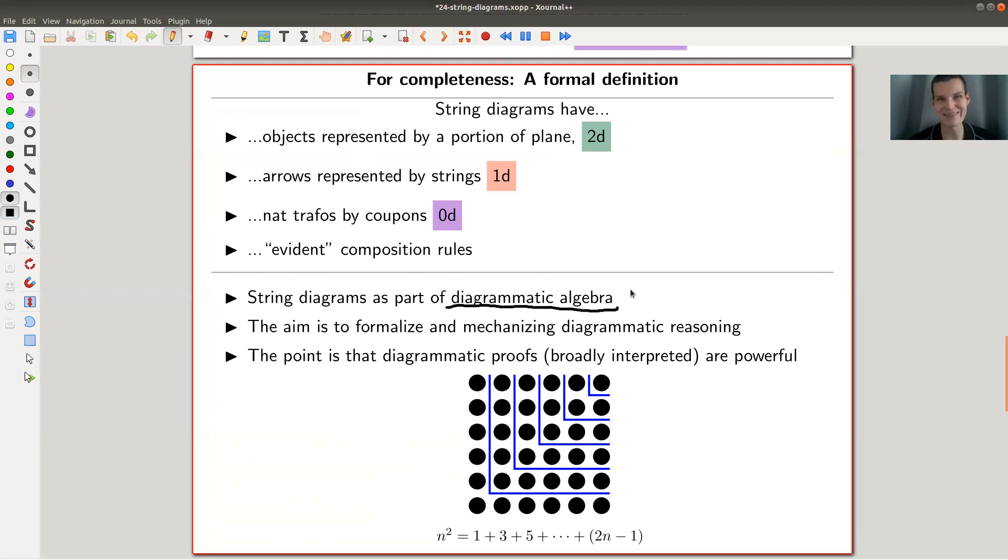So diagrammatic algebra's aim is to really formalize diagrammatic reasoning in a really precise sense. So I can make this really precise, formalized and kind of nice diagrammatic reasoning.